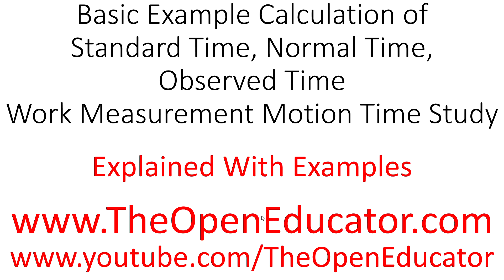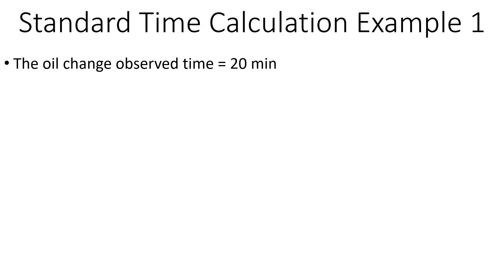Standard time calculation will start with a very basic example first, and then we'll give some advanced level real-life examples. So on this one, for example, let's say we are trying to determine the standard time for oil change. We go there and find out that the oil change takes 20 minutes. We do enough samples to determine that the average observed time it takes to do an oil change is 20 minutes.